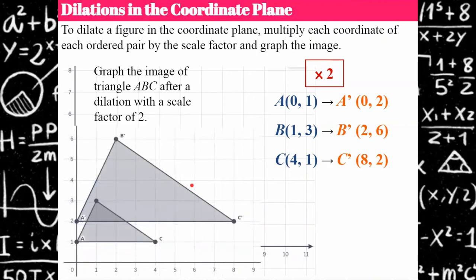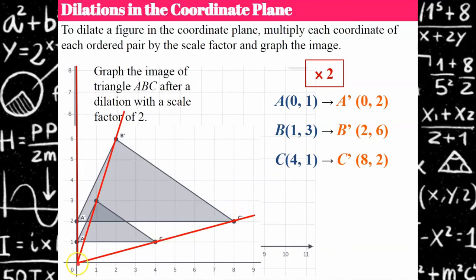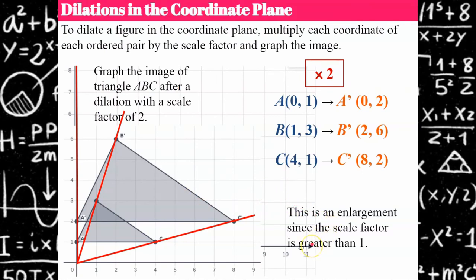Now I can graph. Here is my original figure, and I've graphed the ordered pairs (0, 2), (2, 6), and (8, 2) for A prime, B prime, C prime. To check: in the coordinate plane, the origin is our center of dilation. I draw lines from the origin through each vertex — they all line up, passing through both the original vertex and its prime. This confirms the graph is correct. This is an enlargement since the scale factor is greater than 1.